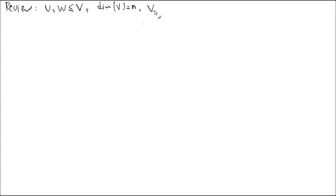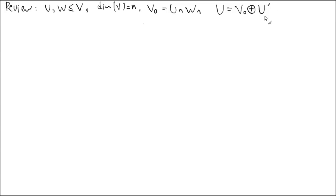Review: u and w are subspaces of v, and the dimension of v is finite, say n. Our v0 is the intersection of u and w, and we extended it on u with this v0 in it. The notation I use is u prime. You can extend from one subspace to the full subspace using the direct sum, called the basis extension theorem.